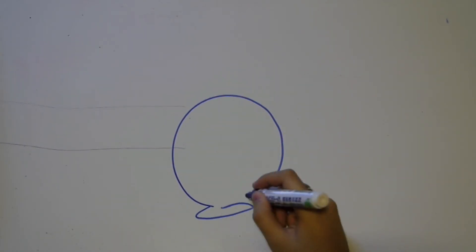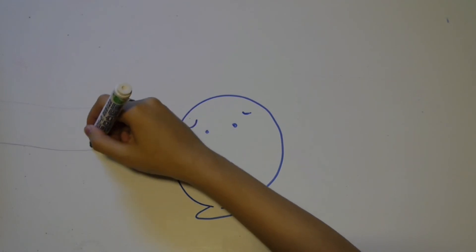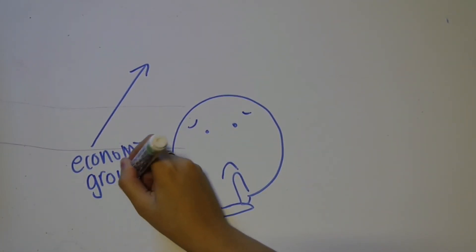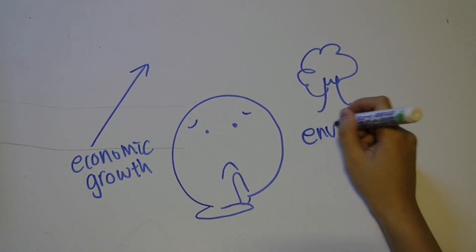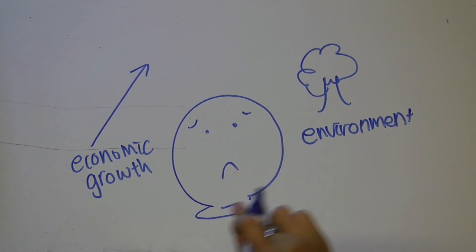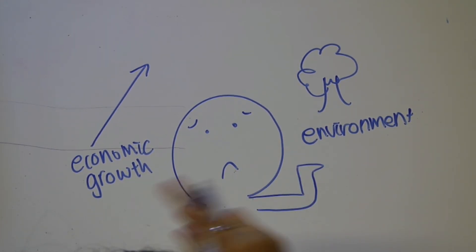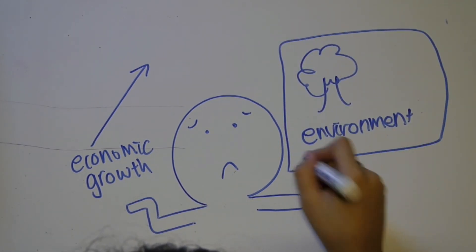We can't really conclude whether carbon tax is beneficial or harmful for Australia in terms of economic growth, because different people will have different answers. However, in terms of reduction in emissions, nine months after the introduction of carbon tax, Australia's emissions of carbon dioxide due to electricity generation have reduced to a 10-year low.